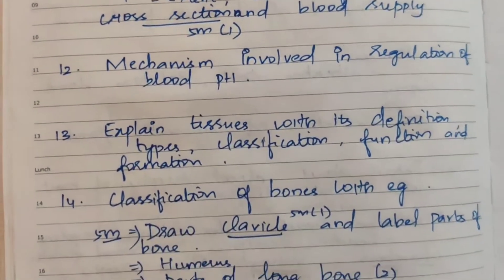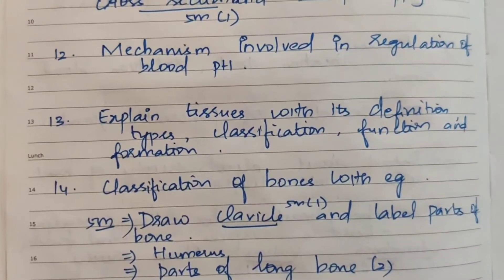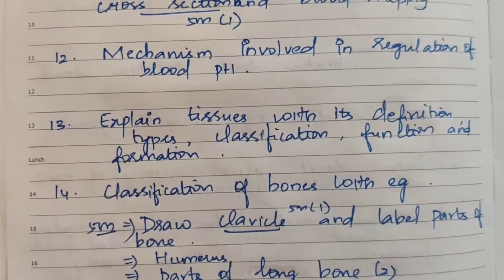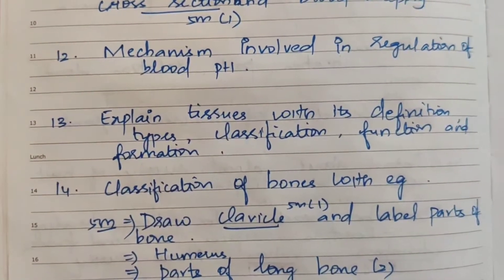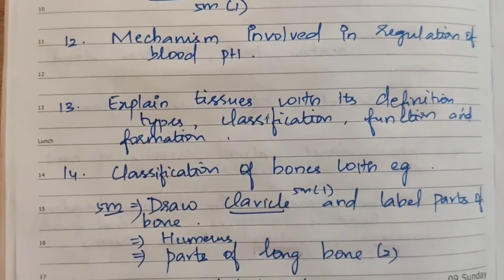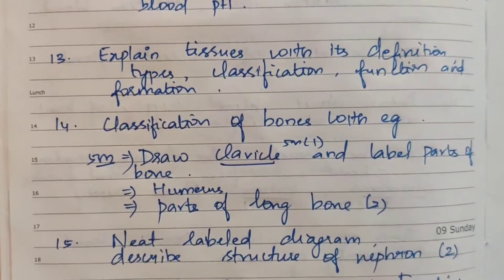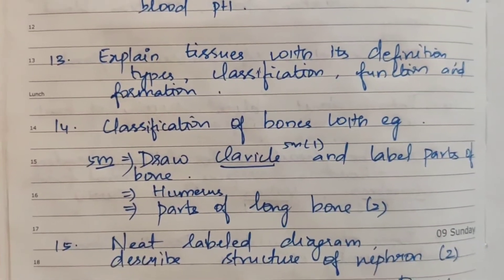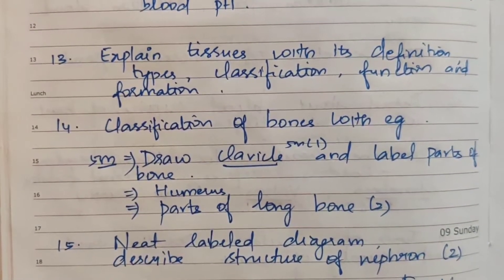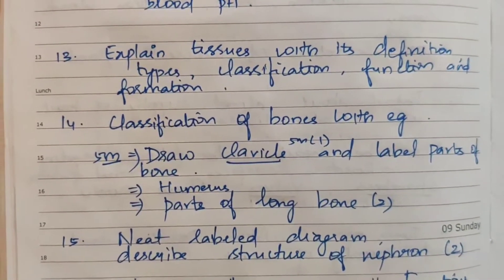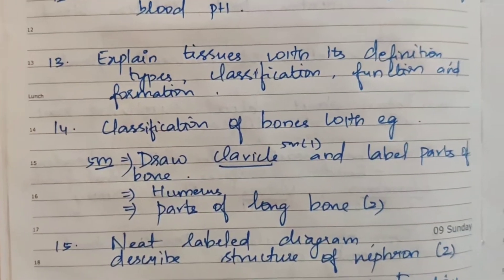The 12th topic: mechanism involved in regulation of blood pH. The 13th topic: explain tissues with its definition, types, classification, function, and formation.